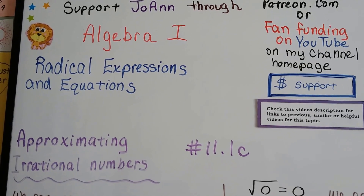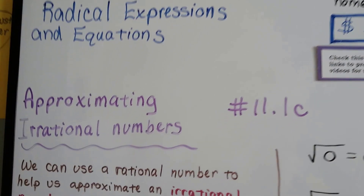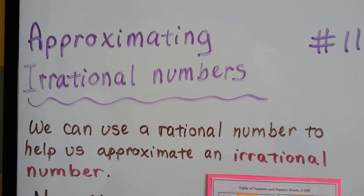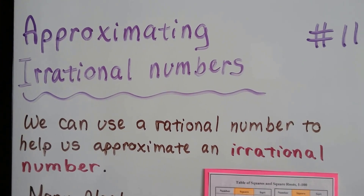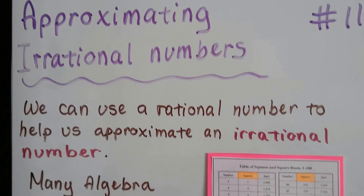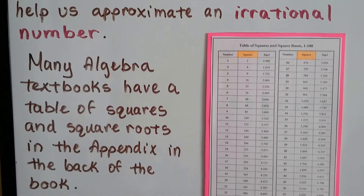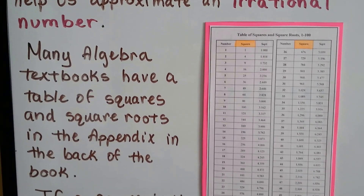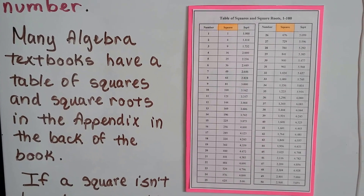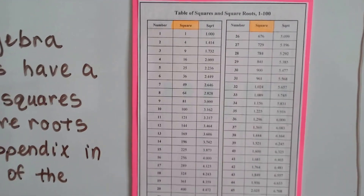Algebra 1, 11.1c: Approximating Irrational Numbers. We can use a rational number to help us approximate an irrational number. Many algebra textbooks have a table of squares and square roots in the appendix in the back of the book, and you can even find them online.